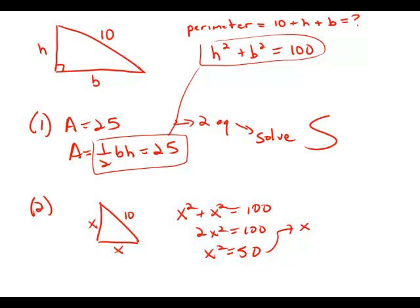We don't actually have to do that calculation, but we could find x, and once we know x, we could find the perimeter. So this statement also gives us enough information to answer the question. This statement is also sufficient.